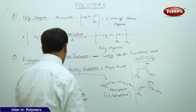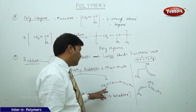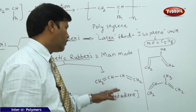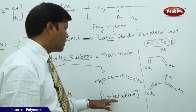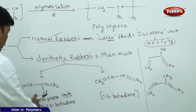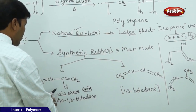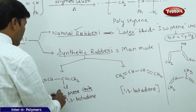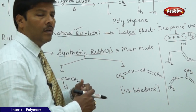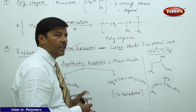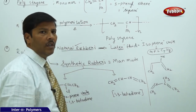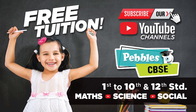Synthetic rubbers have two types of monomers: chloroprene (1,3-butadiene: CH₂=CH–CH=CH₂) and neoprene (2-chloro-1,3-butadiene). These are manmade rubbers. The 2-chloro-1,3-butadiene unit is also called the neoprene unit. Neoprene and 1,3-butadiene units participate in polymerization to give various chain extensions in linear or branched chain patterns.